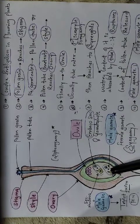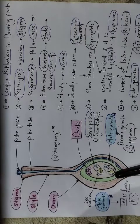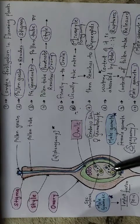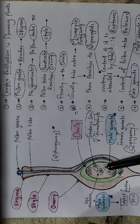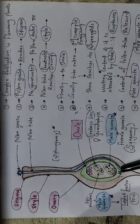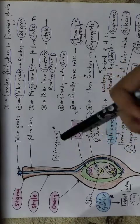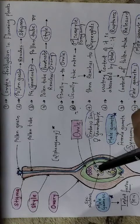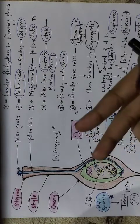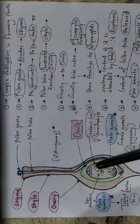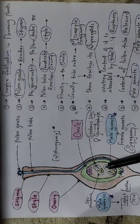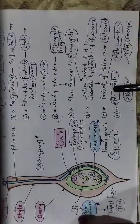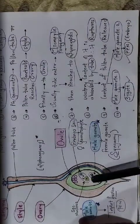On either side of the egg are cells called synergids, which have watery content. The pollen tube enters through one of the synergids, absorbs all the water content, and then bursts, releasing the male gametes into the embryo sac. The pollen tube carries two male gametes — one male gamete fuses with the egg to form a zygote.